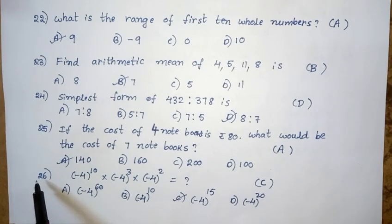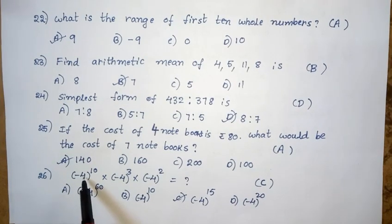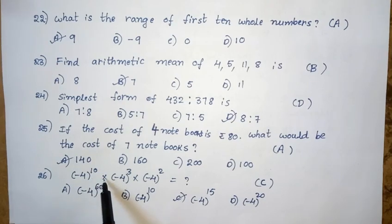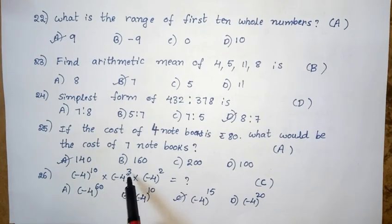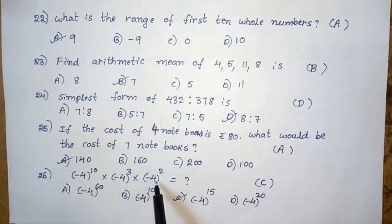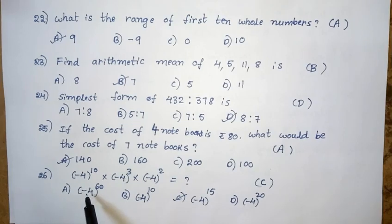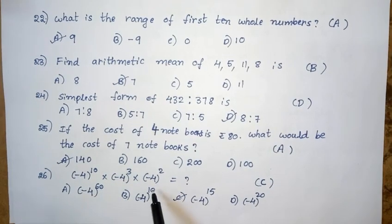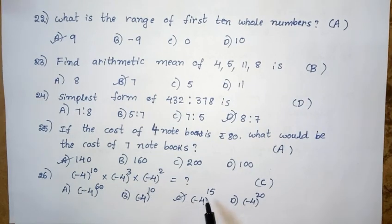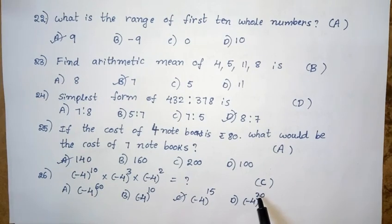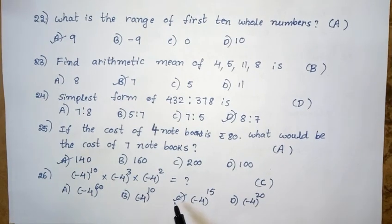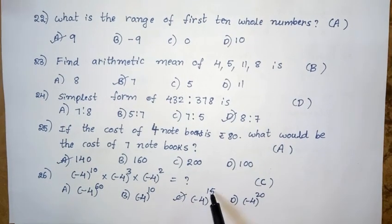Twenty-sixth question: Minus 4 whole power 10, into minus 4 whole power 3, into minus 4 whole power 2 equals — Option A: minus 4 whole power 60. Option B: minus 4 whole power 10. Option C: minus 4 whole power 15. Option D: minus 4 whole power 20. The right answer is option C — minus 4 whole power 15.